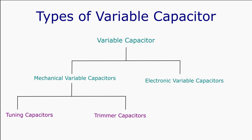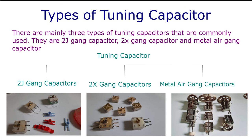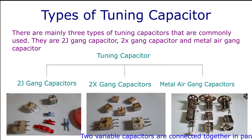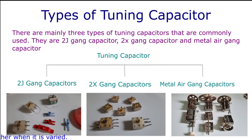The variable capacitor is further classified into mechanical variable capacitors and electronic variable capacitors. The mechanical variable capacitor is again divided into tuning capacitors and trimmer capacitors. A tuning capacitor is a type of capacitor used in radios for tuning stations. These capacitors help us to tune to a particular signal or station in a radio receiver. There are mainly three types of tuning capacitors: 2G gang capacitor, 2X gang capacitor, and metal-air gang capacitors. They are called gang capacitors because two variable capacitors are connected together mechanically so that they move in tandem.